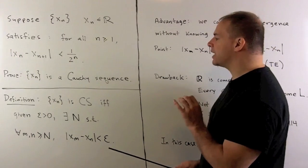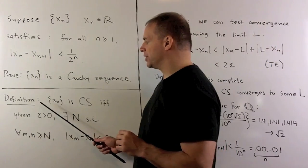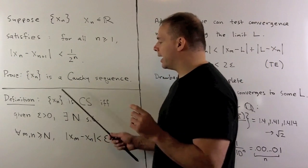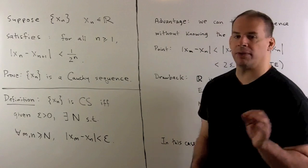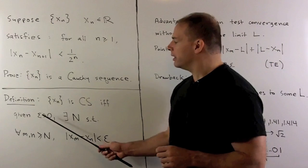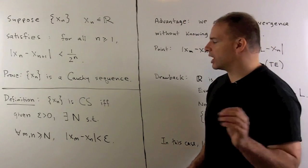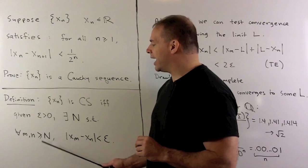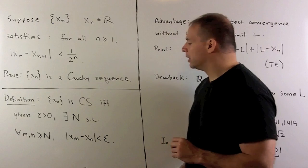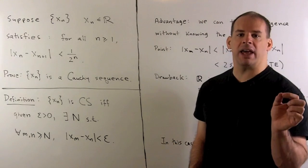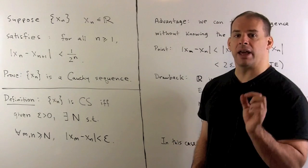The first step is to pull out the definition of Cauchy sequence. x_n is a Cauchy sequence if and only if given any ε > 0, there's some natural number capital N, such that for all m and n ≥ N, we have that the distance |x_n - x_m| < ε.